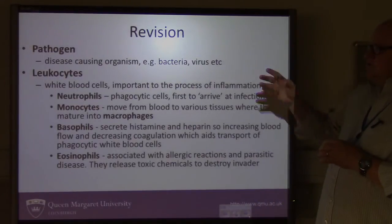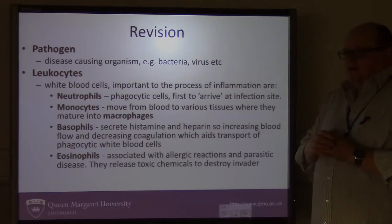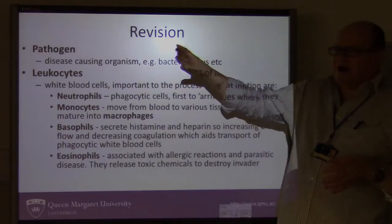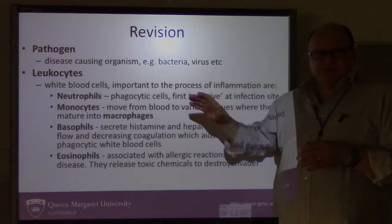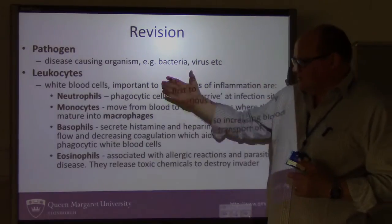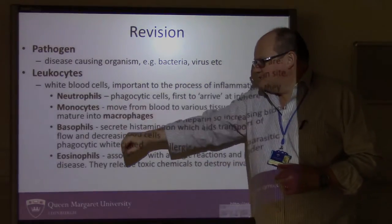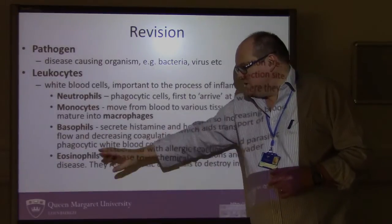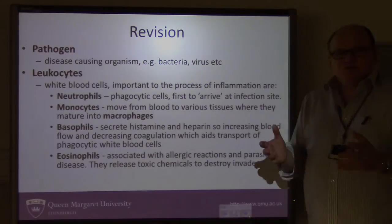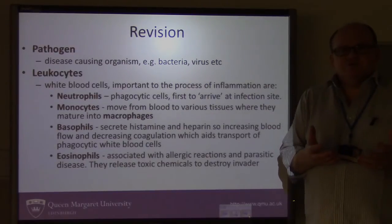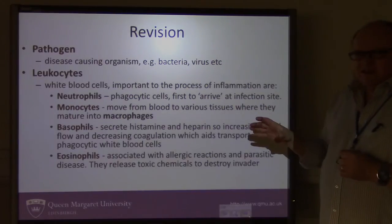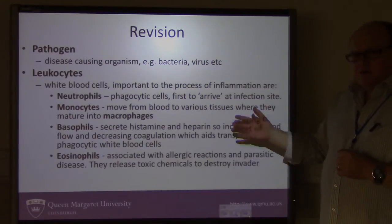This is just a little revision slide taking you back through some terminology that hopefully you'll already be familiar with — for example, what a pathogen is and what the leukocytes are. The leukocytes are the white blood cells and they're subdivided into that list: neutrophils, monocytes, basophils and eosinophils, each with a specific role in our immune response to infection. So that's just a little bit of revision of the basic physiology of the white blood cell.